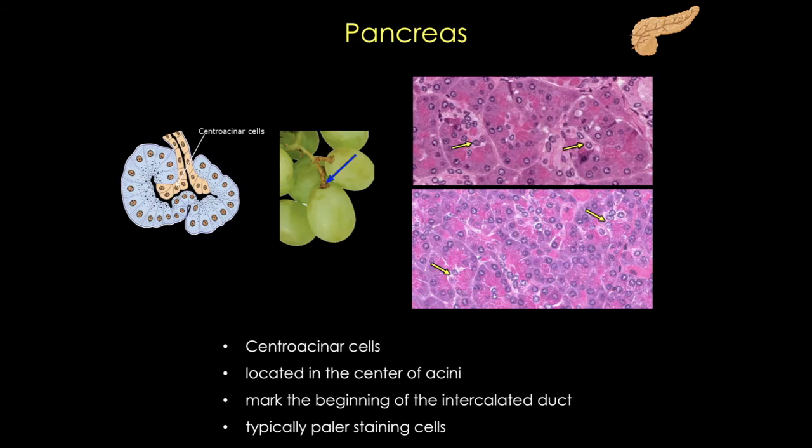But what happens when you're looking at a section of the pancreas and you don't see any islets and you really have trouble identifying central acinar cells? Well, that's exactly when folks do mistake this gland for the parotid gland. So now let's go ahead and check out a couple of features that are unique to the parotid gland.